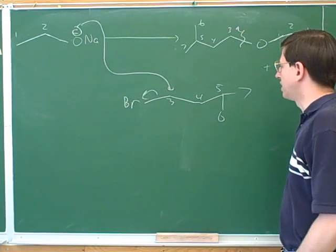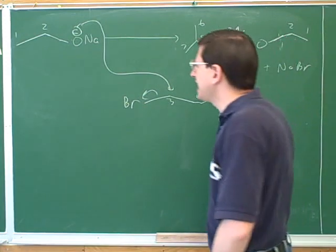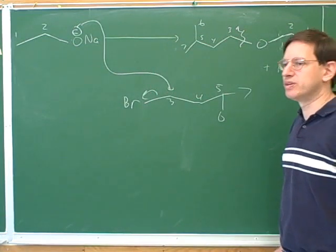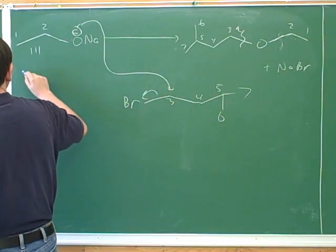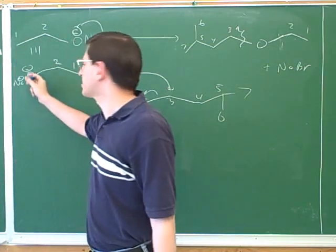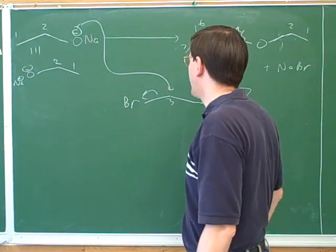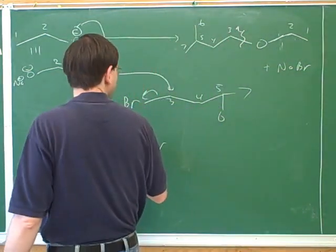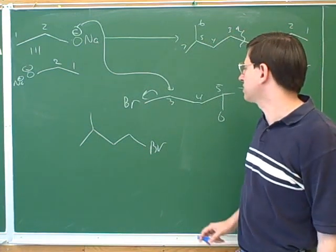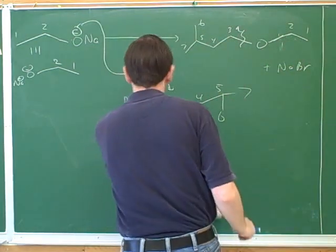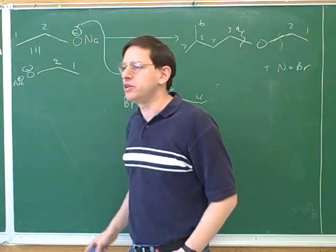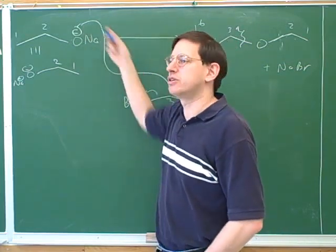Putting the squiggles in the right place was the biggest obstacle in this problem. In the future, it's often helpful to write your starting materials so they look as much like the product as possible. Maybe we would have been better off rewriting our starting material at the very beginning in a form that looks more like the product. This problem was a little different than the previous one — before, I gave you the haloalkane and you had to come up with the alkoxide; this time I gave you the alkoxide and it was your job to come up with the haloalkane.